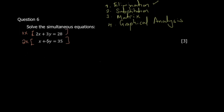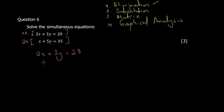The reason we didn't match y is that it would require multiplying one equation by five and the other by three, which is more complicated. So after multiplying, we get 2x + 3y = 28 for the first equation and 2x + 10y = 70 for the second.